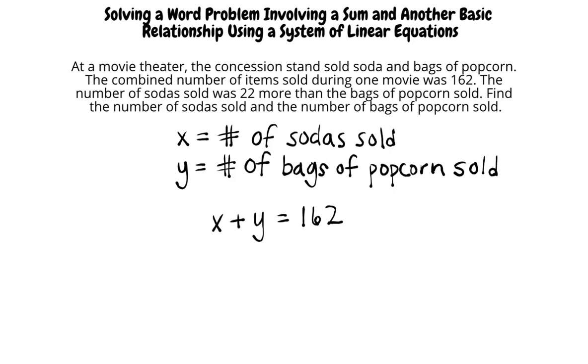If the combined total of both sodas and bags of popcorn sold was 162, this means that x plus y will equal 162. Can you translate the second equation? The number of sodas sold was 22 more than the bags of popcorn sold. So, more soda was sold than bags of popcorn. Since x is the number of sodas and y is the number of bags of popcorn, I think the equation should be x equals 22 plus y. That's correct.